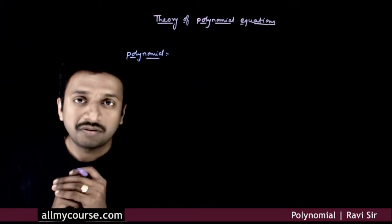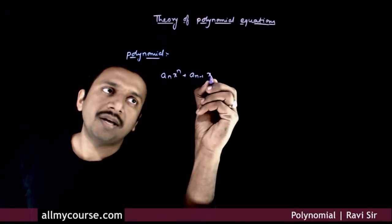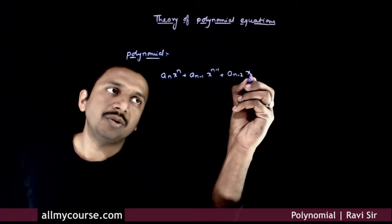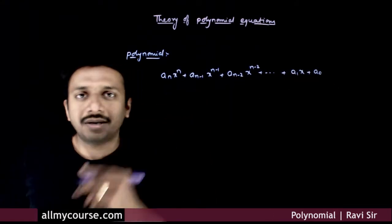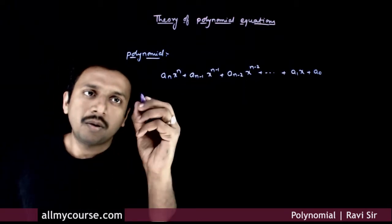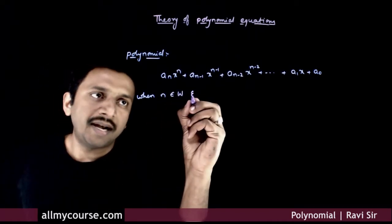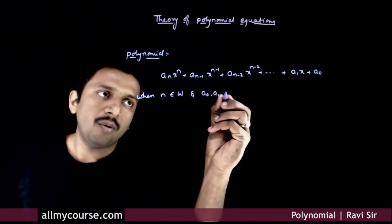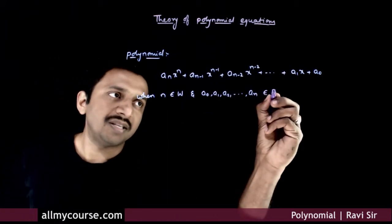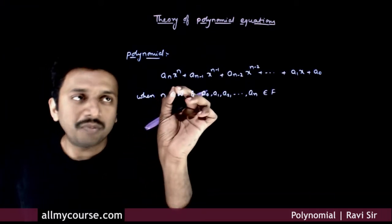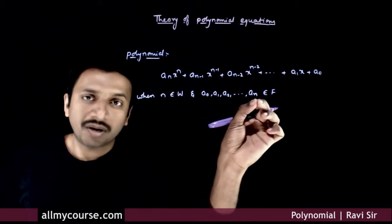A polynomial is an expression of the form a_n x^n + a_(n-1) x^(n-1) + a_(n-2) x^(n-2) + ... + a_1 x + a_0, where n belongs to whole numbers and the coefficients a_0, a_1, a_2, ... up to a_n belong to some number system F. This is called a polynomial in the variable x over the number system F.